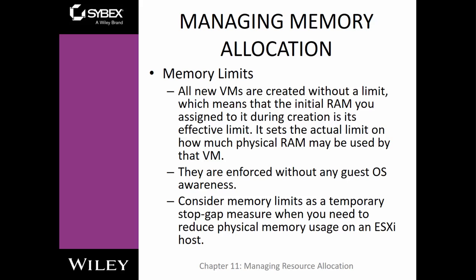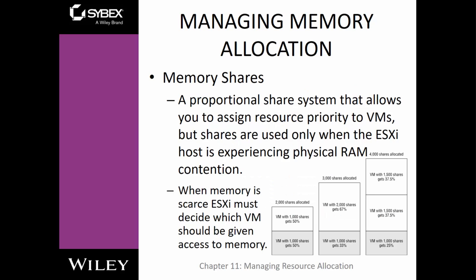Let's talk more about memory sharing. Memory sharing is a proportional shared system that allows you to assign resource priorities, but shares are used only when the ESXi host has experienced physical RAM contention. Basically, it's a way to share RAM space — when the same tasks are stored in memory across, say, three VMs, instead of having memory dedicated for those three VMs, they may share a portion of that memory. When memory is scarce, ESXi must decide which VMs should be given access to certain memory, and that's where the share allocation comes in.